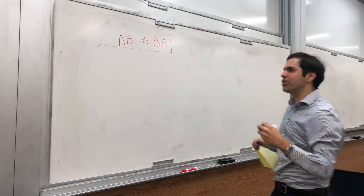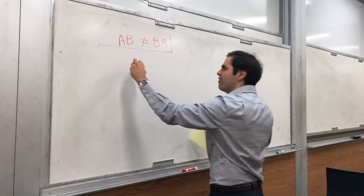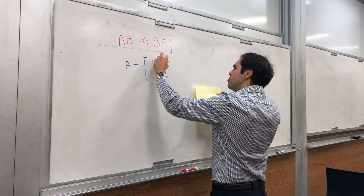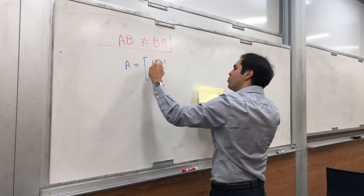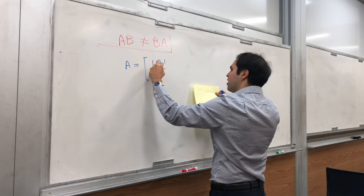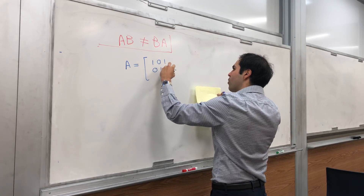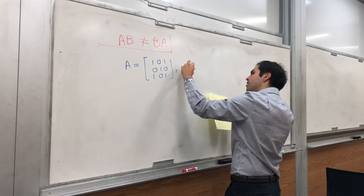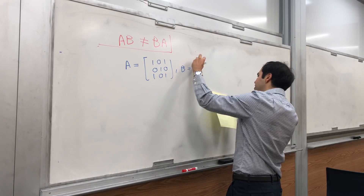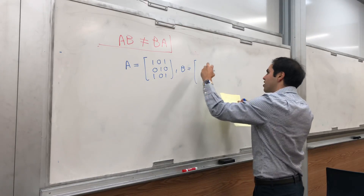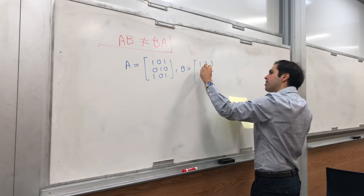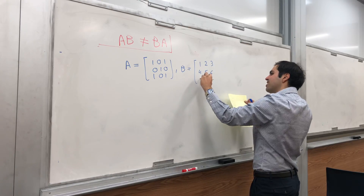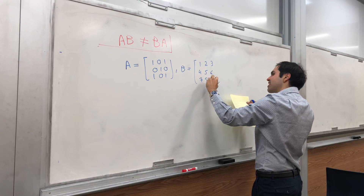Let me just show you an example of that. Take A to be the matrix 1, 0, 1, 0, 1, 0, 1, 0, 1, and B be the matrix 1, 2, 3, 4, 5, 6, 7, 8, 9.